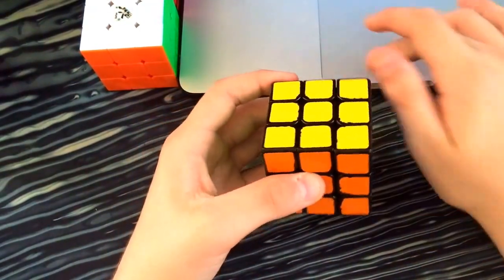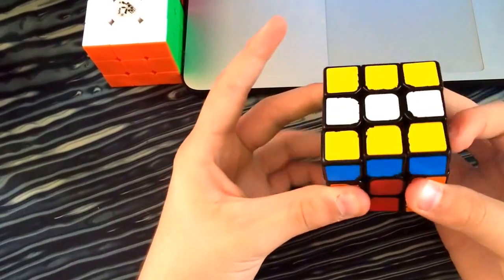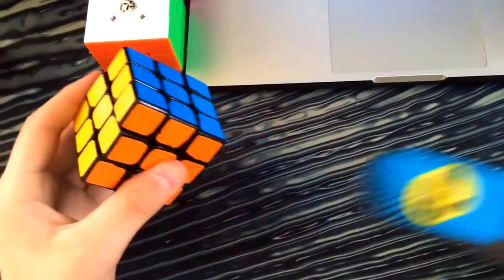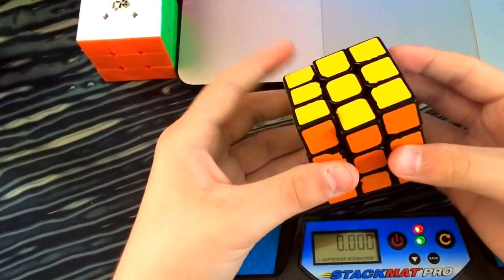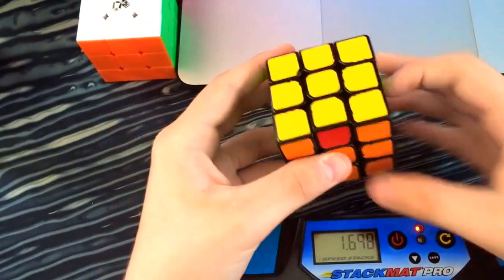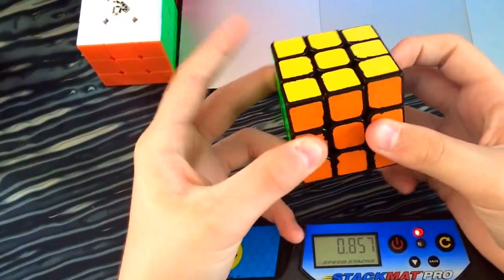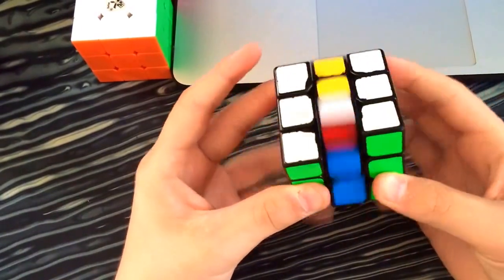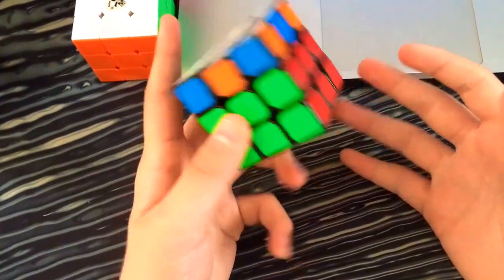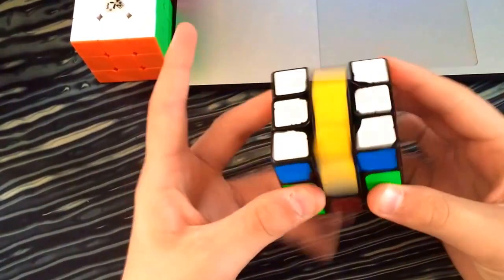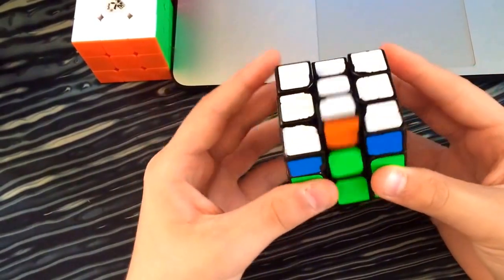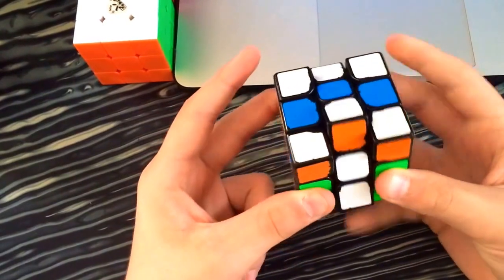For the H perm, I basically use the H perm that everybody uses. Which is, I can pretty easily sub 1 it. Let's see if I can. Oh, shit. There we go. So then the Z perm, looks like this. And yes, by the way, I do use both of my rings. Then you can do a U2 at the end if you want. Oops. Alright.